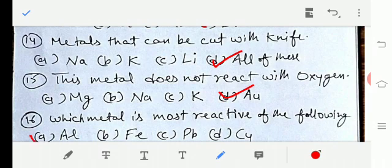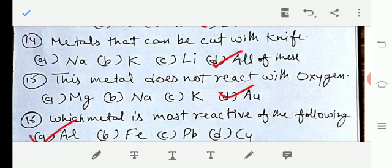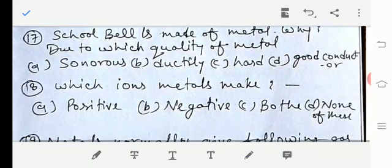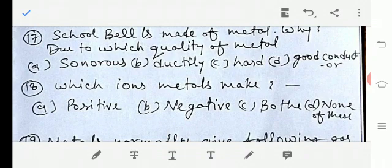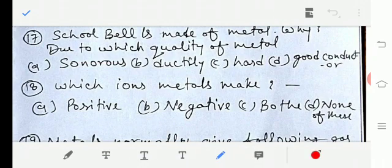Let's move to question number 17: School bell is made of metal, why? Due to which quality of metal? Option A sonorous, option B ductility, option C hard, option D good conductor. So the answer would be option A, sonorous, which is the property of a metal to create sounds.